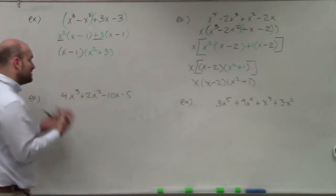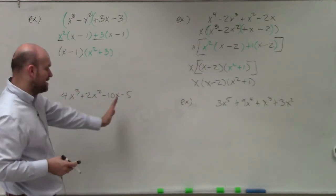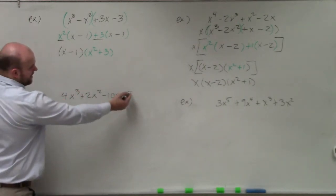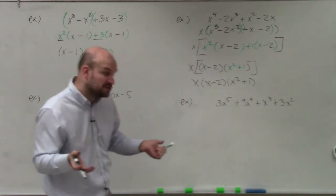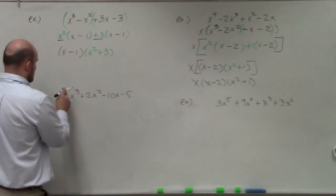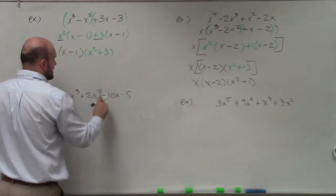OK. So in here, you can see that I'm trying to see if there's any common terms I can factor. Well, these are even and 5 is not. So therefore, I can't factor out a 2 or any other term. So I will group the first two terms and group the last two terms.